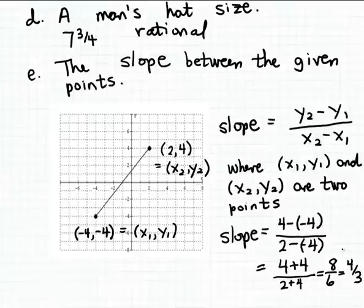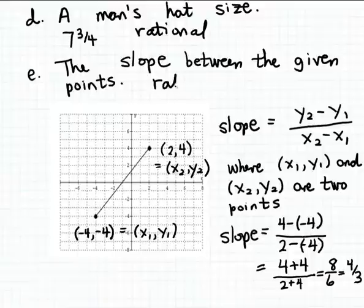Now, 4/3 is a fraction — it's not a whole number, so it's not an integer or a natural number. But it is expressed as a fraction, so the most appropriate type of number for measuring the slope between these two given points is a rational number. Remember, a rational number is any number that can be expressed as a fraction, a terminating decimal, or a non-terminating repeating decimal.